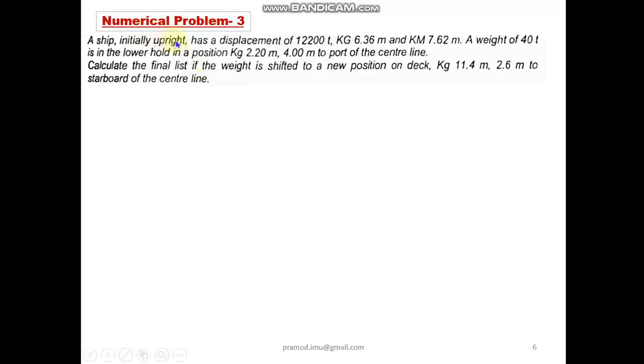The ship initially upright has a displacement of 12,200 tons, KG 6.36 meters, and KM 7.62 meters. A weight of 40 tons in the lower hold in a position KG 2.2 meters, 4 meters to the port of central line. Calculate the final list if the weight is shifted to a new position on the deck, KG 11.4 meters and 2.6 meters to starboard of the central line.